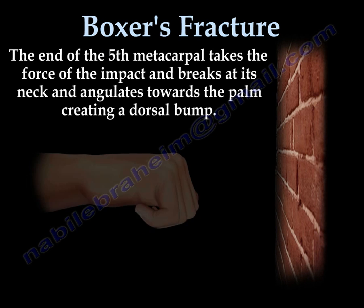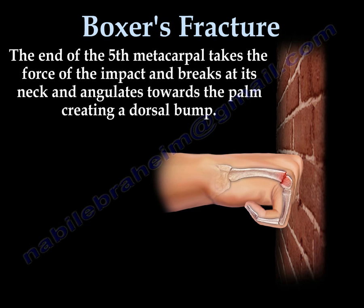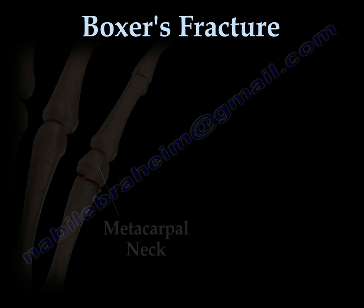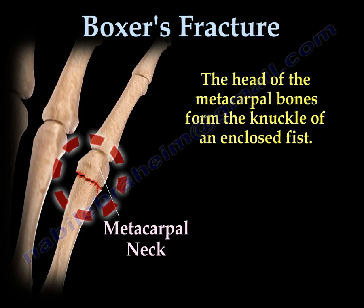The end of the fifth metacarpal takes the force of the impact and breaks at its neck, angulating towards the palm and creating a dorsal bump. This break is usually at the knuckle of the fifth metacarpal bone.